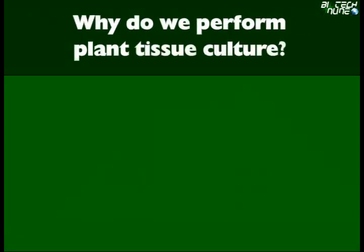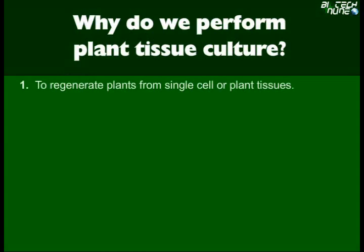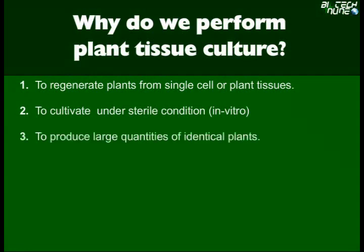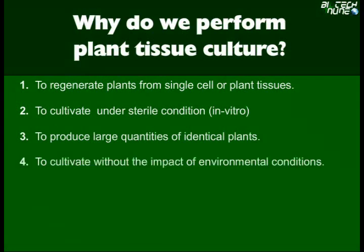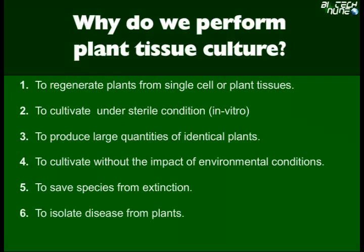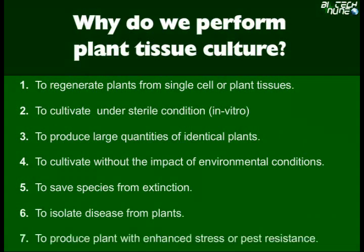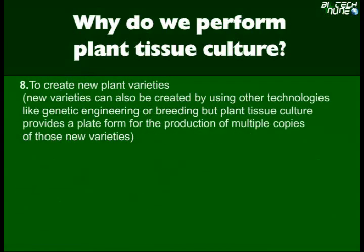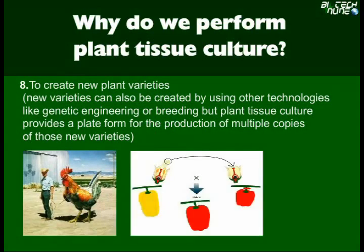Why do we perform plant tissue culture? We perform this process to regenerate plants from single cells or plant tissues, to cultivate under sterile conditions, to produce large quantities of identical plants, to cultivate without the impact of environmental conditions, to save species from extinction, to isolate disease from plants, to produce plants with enhanced stress or pest resistance, and to create new plant varieties. New varieties can also be created using other technologies like genetic engineering or breeding, but plant tissue culture provides a platform for the production of multiple copies of those new varieties.